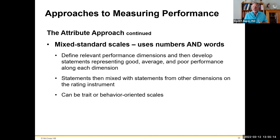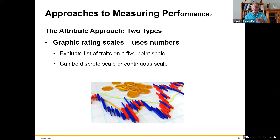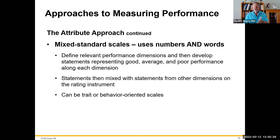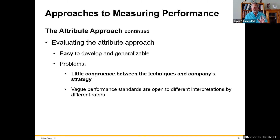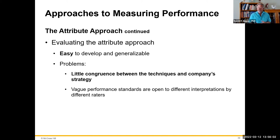Another type within the attribute approach uses both numbers and words — you'll see an example in your text. You take the relevant performance dimensions and add more descriptive verbiage, representing good, average, and poor performance along each dimension. This mixed standard scale is probably a better method than the pure graphic rating scale because it's more descriptive. It's a favorite in many HR departments because having more verbiage helps supervisors understand exactly what a rating of two or three means, though it takes more work to develop.